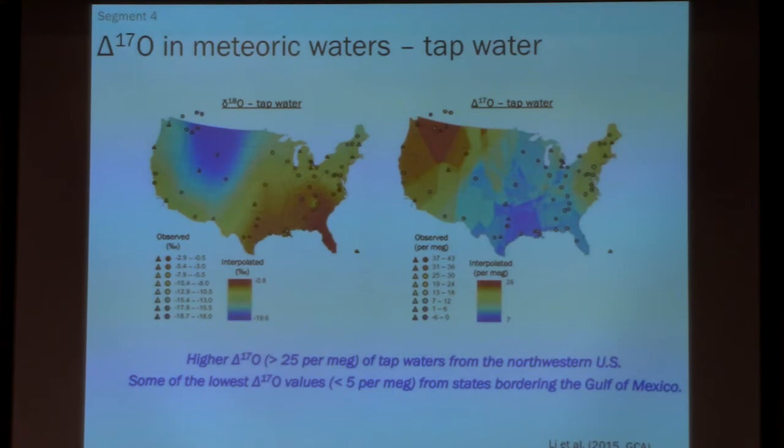This is an isoscape that she basically built just from her samples and they're generally representative. And what she sees for this is, it's limited but we see a variation, geographical variation in CAP 17O in the U.S. from tap water. And we see it ranging anywhere from 0 to 40 per meg, so a similar kind of variation before. It seems like we have our lowest values in the Gulf of Mexico, highest values up sort of the northwest and the northeast.